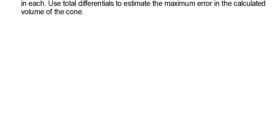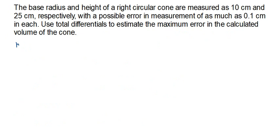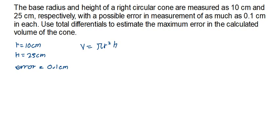Now let's look at another example. The base radius and height of a right circular cone are measured as 10 cm and 25 cm respectively, with a possible error in measurement of as much as 0.1 cm. We use total differentials to estimate the maximum error in the calculated volume of the cone.